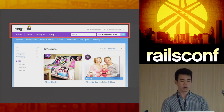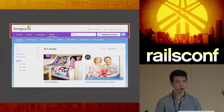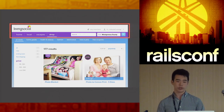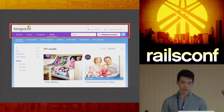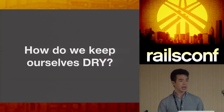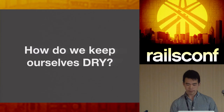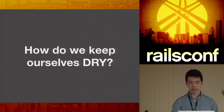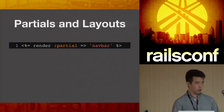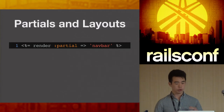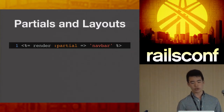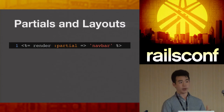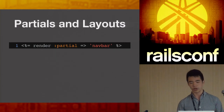One thing we've discovered along the way of splitting into smaller services is that things very simple in a monolithic Rails app can become quite complex in a service-oriented architecture. The big question is: when it comes to sharing views, how do we keep ourselves DRY? In a monolithic Rails app you have partials and layouts — you throw the nav bar into a partial, render it in your application layout, and it shows up everywhere.